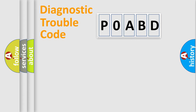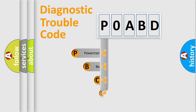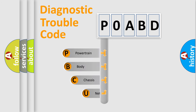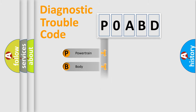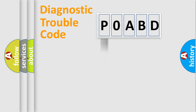Let's look at the history of diagnostic fault code composition according to the OBD-2 protocol, which is unified for all automakers since 2000. We divide the electric system of the automobile into four basic units: Powertrain, Body, Chassis, and Network.